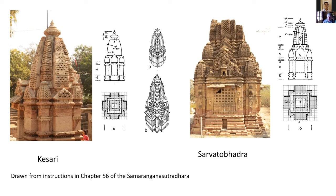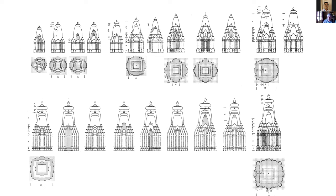Kesari is important because it is the first of a series of 25 temples. This series, starting with Kesari and ending in Meru, appears in a number of texts. It evolves with the times — the texts are not all the same — but they share the idea of 25 types starting with Kesari, which has five andakas, and ending with Meru, which has 101. With each successive type you have four more andakas. So that's a clue when trying to figure out the designs from the text.